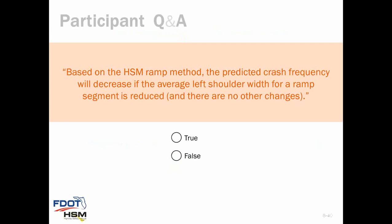Poll: true or false — based on the HSM ramp method, the predicted crash frequency will decrease if the average left shoulder width for a ramp segment is reduced, with no other changes. The correct answer is false. The predicted crash frequency will increase if the left shoulder width is reduced.